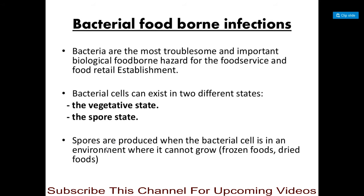Bacteria are the most troublesome and important biological foodborne hazard for food service and food retail establishments. Bacterial cells can exist in two different forms: the vegetative state, which is a metabolically active form, and the spore state, which is a dormant and metabolically inactive form. Spores are produced when the bacterial cell is in an environment where it cannot grow, such as in frozen or dried foods.